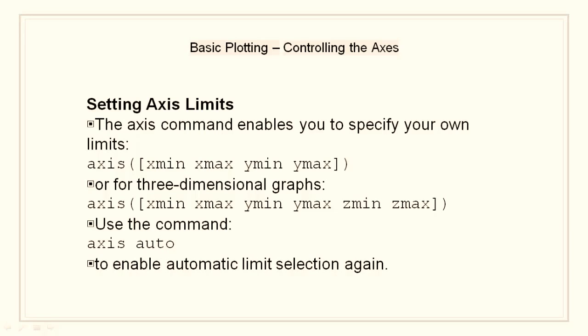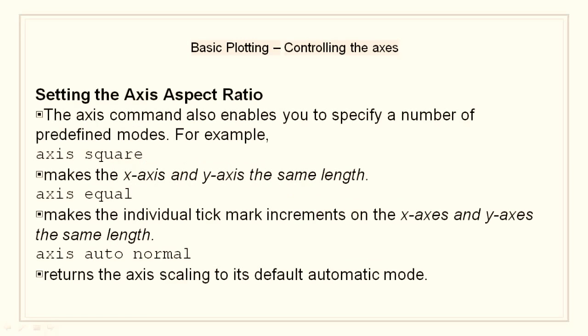Setting axis limits. The axis command enables us to specify our own limits like axis xmin, xmax, ymin, ymax. Or for three-dimensional graphs, we have xmin, xmax, ymin, ymax, and zmin and zmax. We use the command axis auto to enable automatic limit selection.